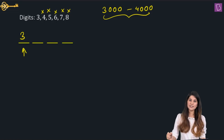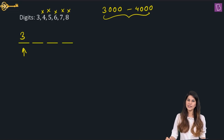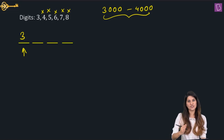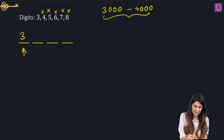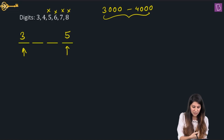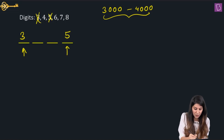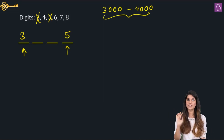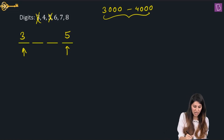The next condition says the number should be divisible by 5. The last digit must be 0 or 5, but 0 is not available, so I'll fix 5. So 3 is gone, 5 is gone — repetition is not allowed. So now we have 4, 6, 7, and 8: four digits remaining.